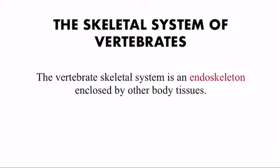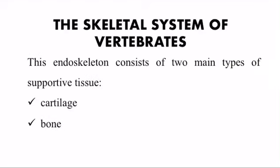The skeletal system of vertebrates. The vertebrate skeletal system is an endoskeleton enclosed by other body tissues. The endoskeleton consists of two main types of supportive tissues: cartilage and bone.